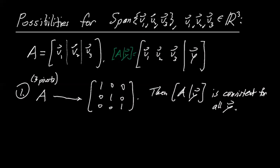Then this is consistent for all Y, for all vectors Y, which means every vector can be written as a linear combination of V1, V2, and V3. So then that case, the span of V1, V2, and V3 is all of R³, all of three-dimensional space.